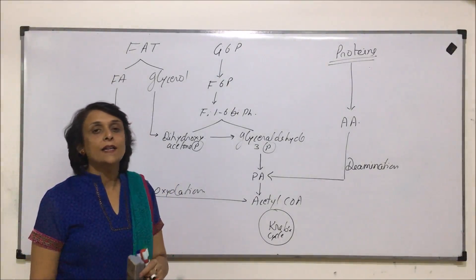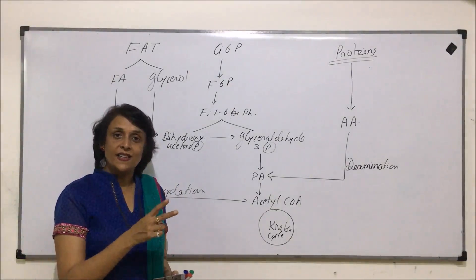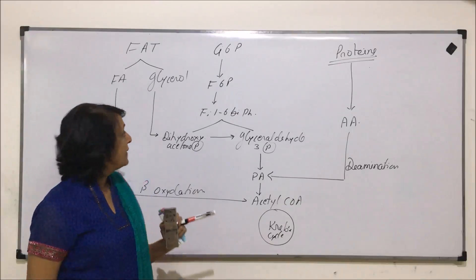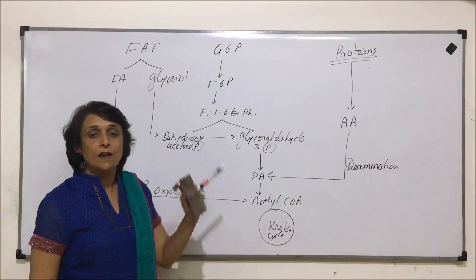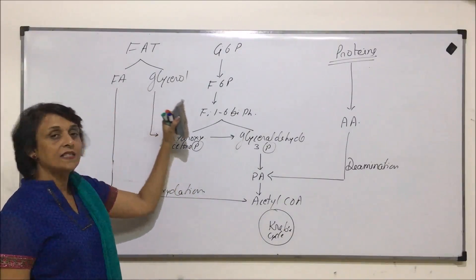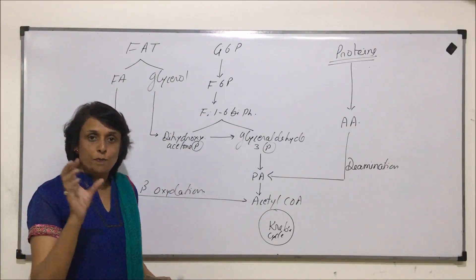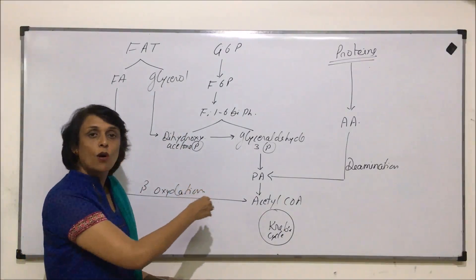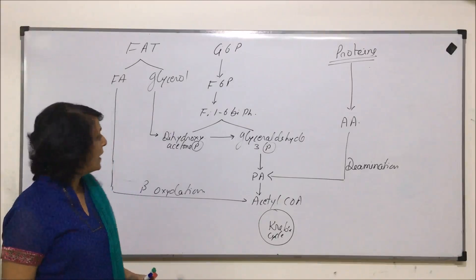Diglyceride fat will give us two fatty acids and one glycerol. And triglyceride fat will give us three fatty acids and one glycerol. So depending upon the molecule, we can go on counting the number of ATPs.